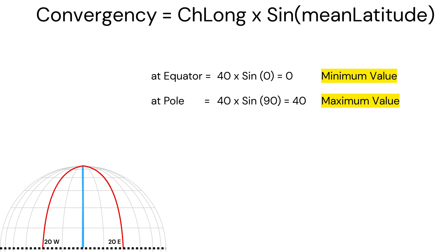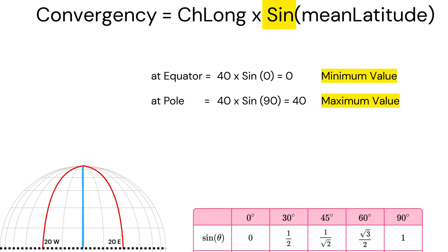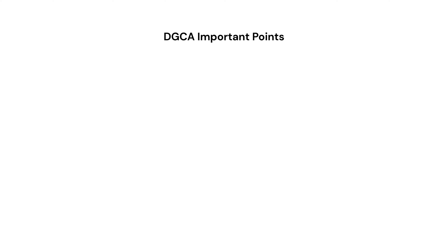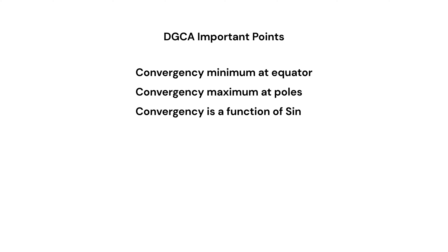This happens because the formula uses the sin function, and sin values range from 0 at 0 degrees to 1 at 90 degrees. So even with the same longitude difference, convergence will be smallest at the equator and largest at the poles. And it is a function of sin theta. There are two more formulas.